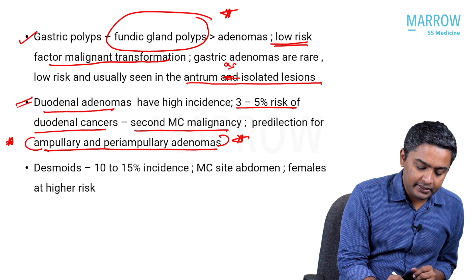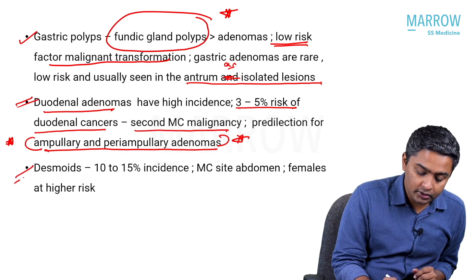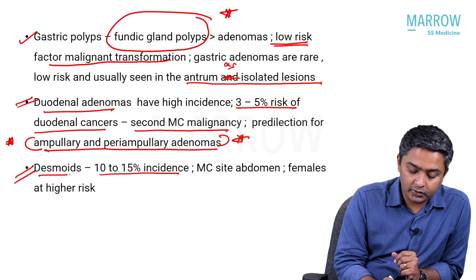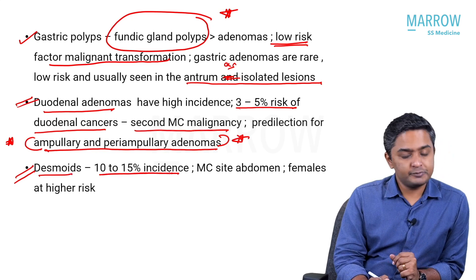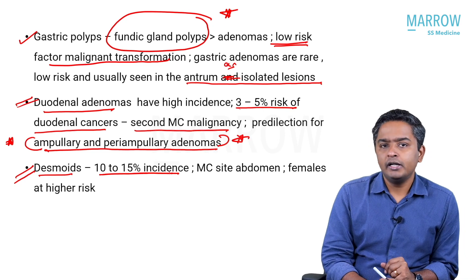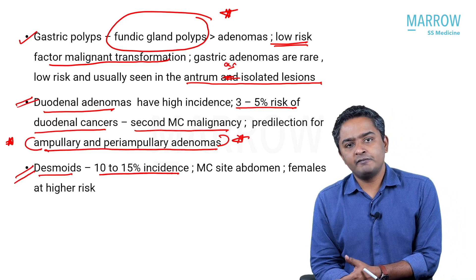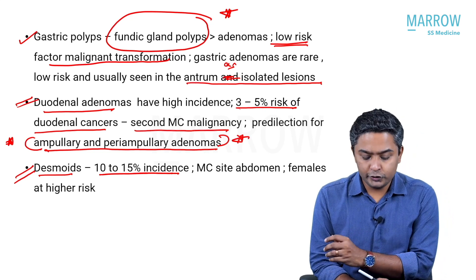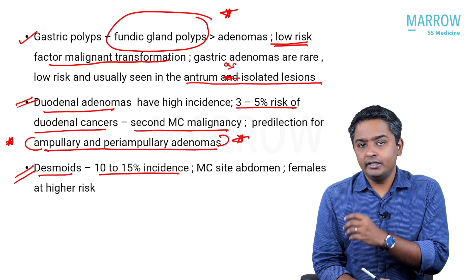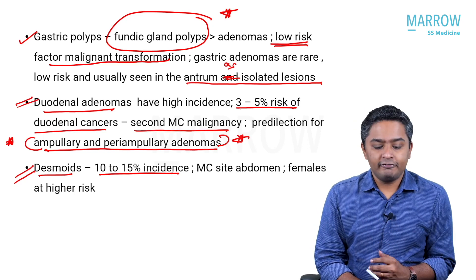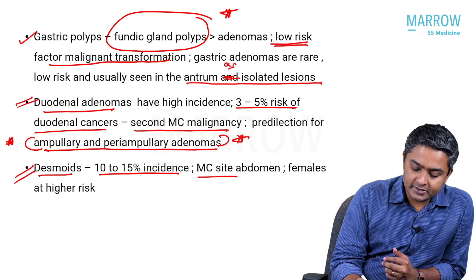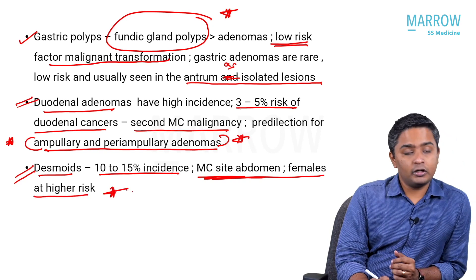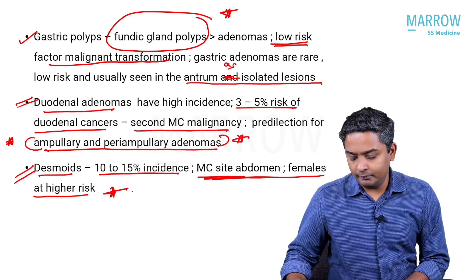Another important feature of FAP is the desmoid tumor. The incidence is around 10 to 15 percent. Desmoid is a soft tissue tumor that can happen in the parietal tissue as well as the visceral tissue, including the abdominal walls. It is an important cause of mortality and morbidity. The most common site is the abdomen, and females are at higher risk for development of desmoid tumors in FAP.